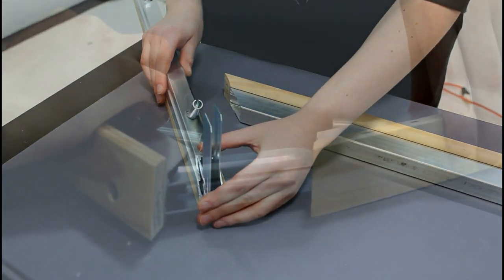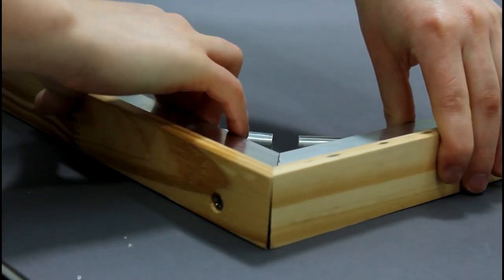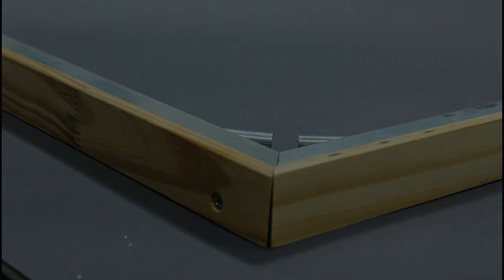Then slide the stretcher bar with aluminum corners into another stretcher bar in order to connect the two pieces. Repeat this for each corner.